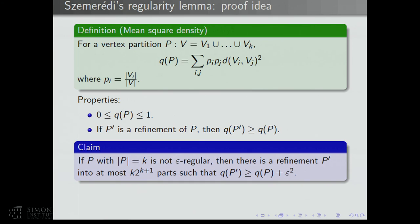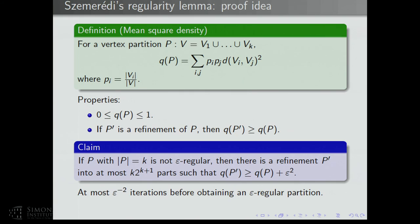How do you deduce the regularity lemma from this claim? You start off with a partition into just one part. If that's regular, you're done. Otherwise, you apply this claim, get a refinement, and the mean square density goes up by epsilon². At each step, if the partition is regular, you're done; otherwise you find a refinement and the mean square density goes up by epsilon². After at most 1/epsilon² steps it must stop, since the mean square density can't exceed 1.